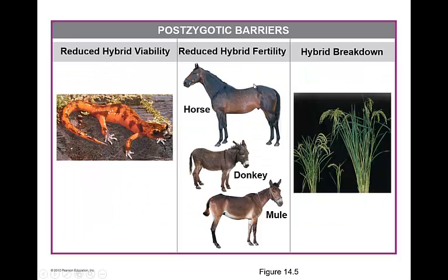In the case of the postzygotic barrier — after a zygote is able to be produced — you may have things like reduced hybrid viability or reduced hybrid fertility. These hybrids may be born, but they're simply not going to ever be able to have babies of their own. In reduced hybrid viability, they may form but are going to die very early on. Hybrid breakdown occurs when you try to mate two of these hybrids together — the F2 generation — and you're going to see just a much smaller, weaker type of offspring.